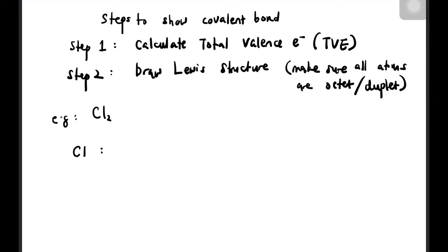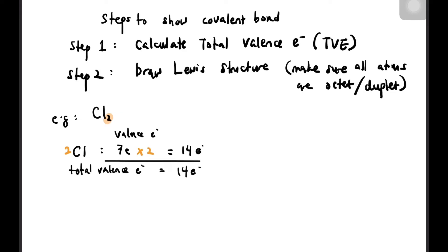Let's go back to the first example, Cl₂. There are seven valence electrons for each Cl atom, and there are two Cl atoms, so seven times two gives 14. The total valence electrons is 14. We draw Cl and Cl, draw the bond between them — that uses two electrons, leaving 12 electrons. We then place all remaining electrons on both Cl atoms.